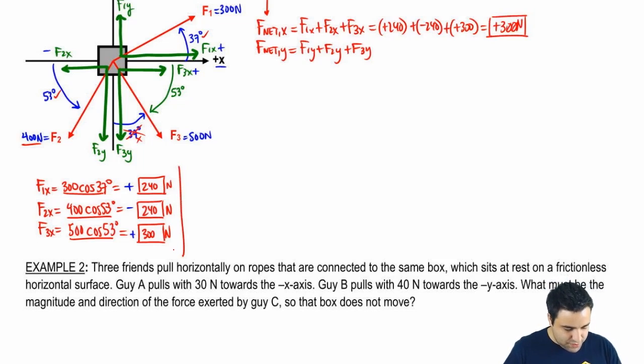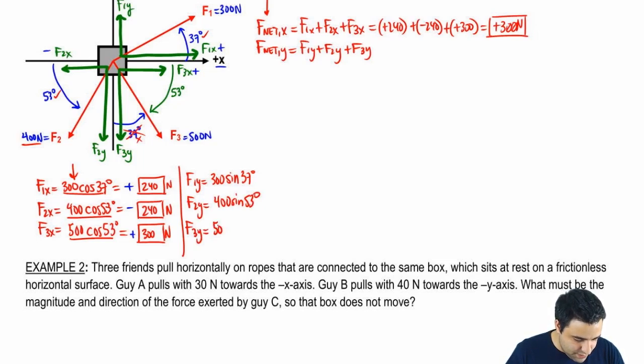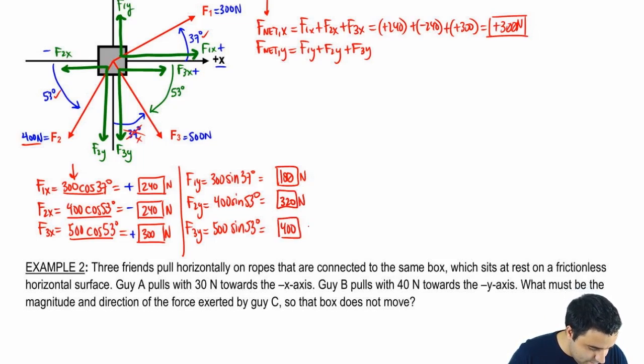All right? So let's do f net y. I'll try to squeeze some space over here. f1 y is just f1, which is 300 sine of 37. And I can just kind of look at the numbers here and just copy that, except that it's going to be sines instead. So 400 sine of 53. And f3 y is 500 sine of 53. And I have these numbers here. This is 180. This is 320. And this is 400. Now let's look at the signs. f1 y is positive, and the other two guys are negative. So positive, negative, negative. When I combine all this stuff in here, I have 180 positive, 320 negative, 400 negative. And if I combine everything, I have negative 540 newtons.